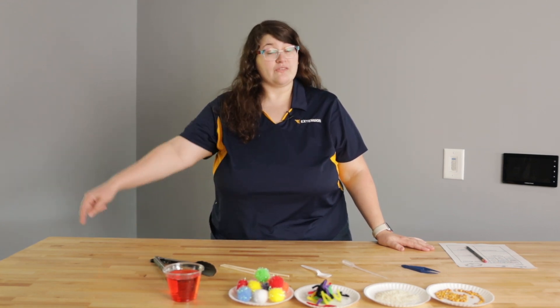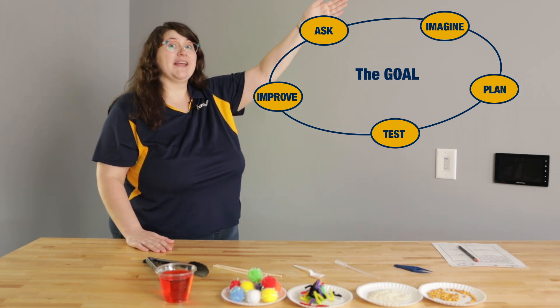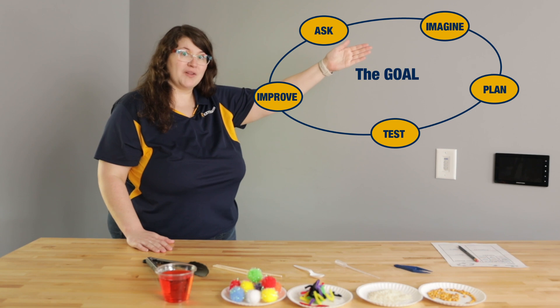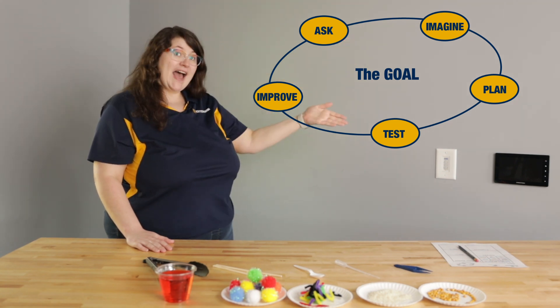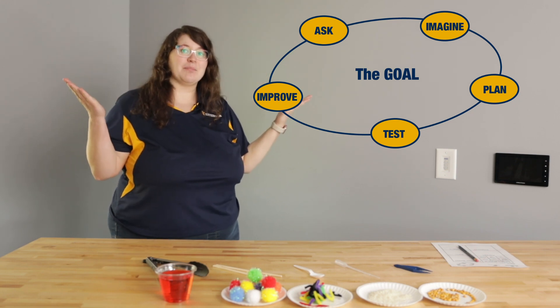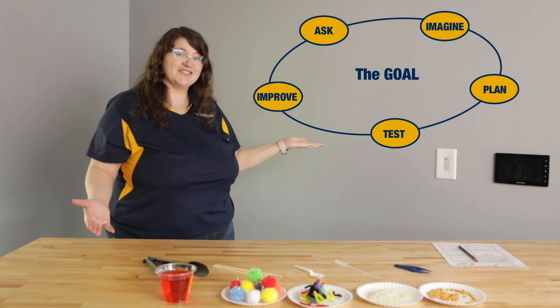An engineer is a person who uses their knowledge of math and science to solve problems. The engineer design process is a five-step cycle. At the top we have 'ask,' where you ask a question about how to solve your problem. The next step is 'imagine,' where you imagine your solution. After that we have 'plan,' where you write out your plan and determine what steps you're going to take. After that you create a prototype and test it. No invention works perfectly the first time, so sometimes you move to the next step: improve your design. You do this by asking, 'What can I change about my prototype to make it work better?' And then the whole process starts again.